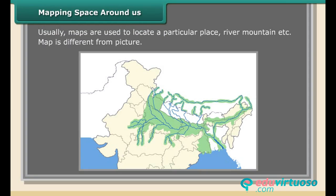Mapping space around us: Usually maps are used to locate a particular place, river, mountain, etc. A map is different from a picture. This map is drawn by Radha. In this map, the route from her house to her uncle's house is shown. How far is Radha's house from her uncle's house? From this map, it is very difficult to find which place is near from Radha's house. We do not know the distance between circles, so there is a lack of information. We cannot answer the questions.